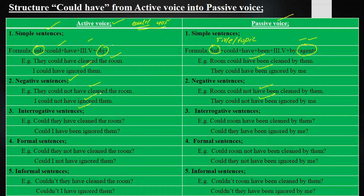Interrogative sentences are those in which we ask a question. For example: 'Could they have cleaned the room?' becomes 'Could the room have been cleaned by them?' And 'Could I have ignored them?' becomes 'Could they have been ignored by me?'